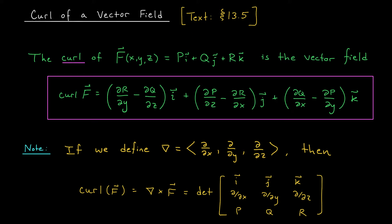If you'll recall, we often think of the cross product like the determinant of a 3 by 3 matrix. We put our standard basis vectors i, j, k in the first row. We put our first vector in the second row — that's our del operator. And finally, in the bottom row, we put our other vector: p, q, r. So this is how I remember the curl — much, much easier.